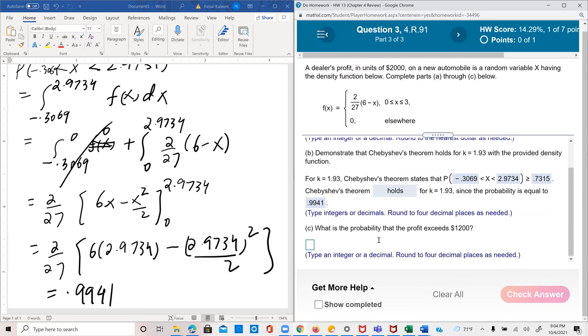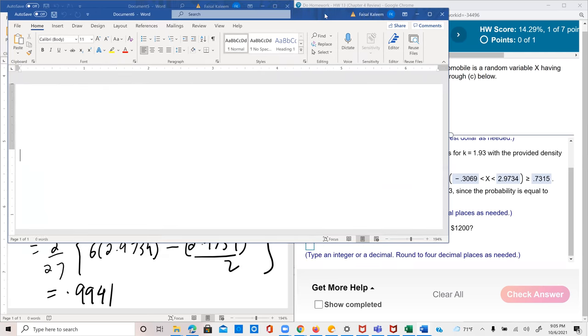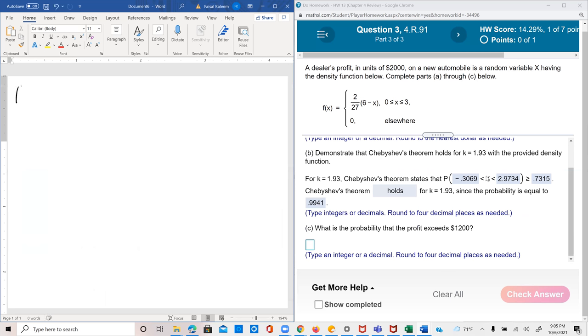So what's the probability that the profit exceeds $1,200? So probability that profit is greater than $1,200, now this $1,200, they have multiplied the 2,000. Remember, x was in units of 2,000. So this $1,200 is not x, it's the x multiplied by the 2,000. And we want to change it in terms of x so that we can use the probability function that is given. So that means probability x is greater than 1,200 over 2,000 equals probability x is greater than 0.6.